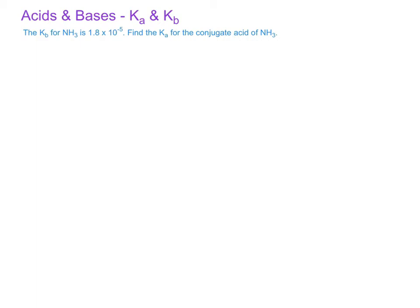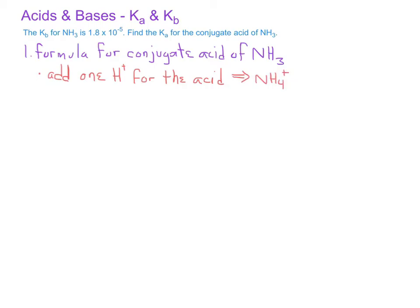The first thing you want to do is write the formula for the conjugate acid of ammonia. We've done this type of problem in other examples previously. So the conjugate acid of ammonia would have one more hydrogen ion than ammonia. If we add one hydrogen ion to NH3, we would get NH4 plus as the conjugate acid of ammonia.